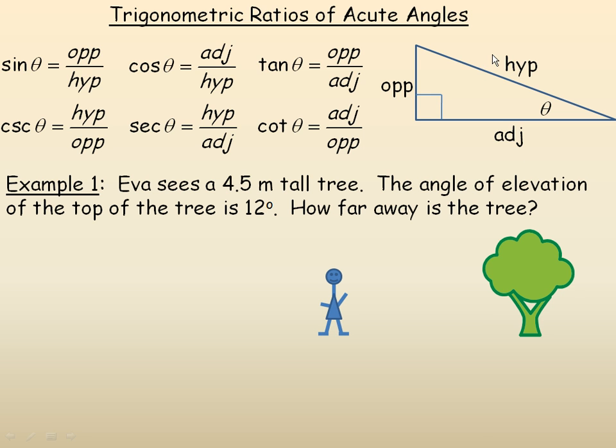After labeling the three sides, the sine ratio is the ratio of the opposite side to the hypotenuse. The cosine ratio is defined to be the adjacent side divided by the hypotenuse. The tan ratio is the ratio of the opposite side to the adjacent.